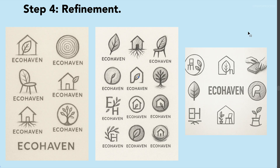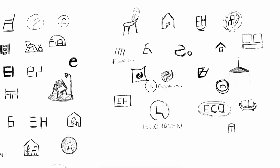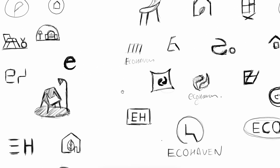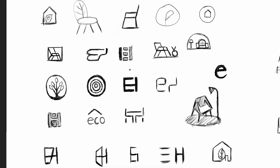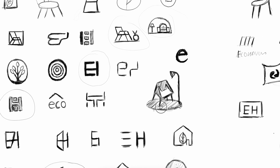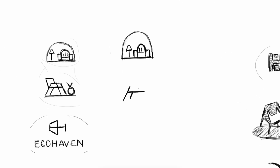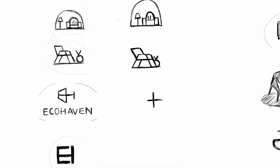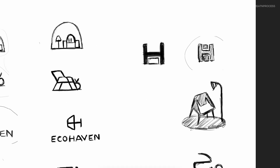Next is step number four: refinement. Now you evaluate. Look over all your sketches and think about which ones best fit the brief and the five principles we learned earlier. Circle out your top two to three concepts you like, then on a new page redraw these selected ideas with more care and detail. Clean up the lines, define the shapes, and think about balance and proportion.